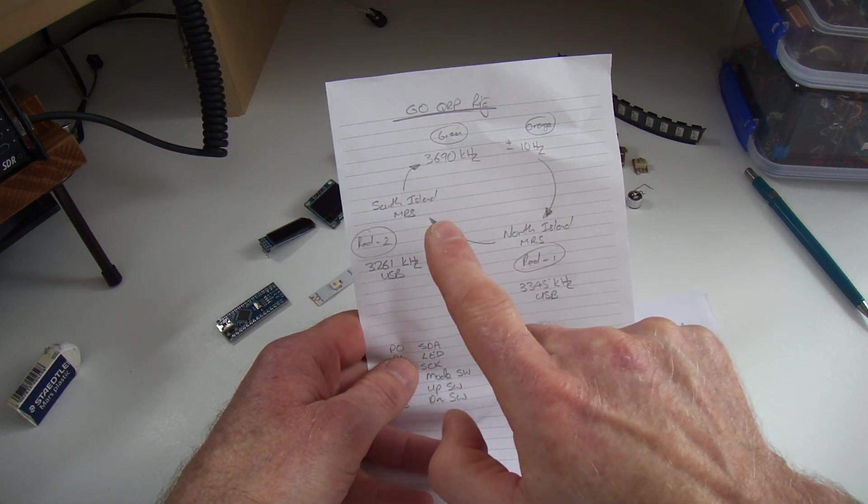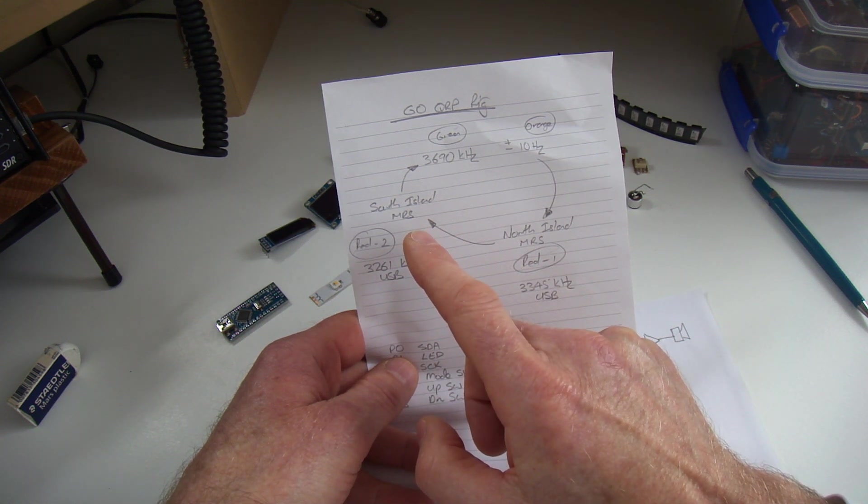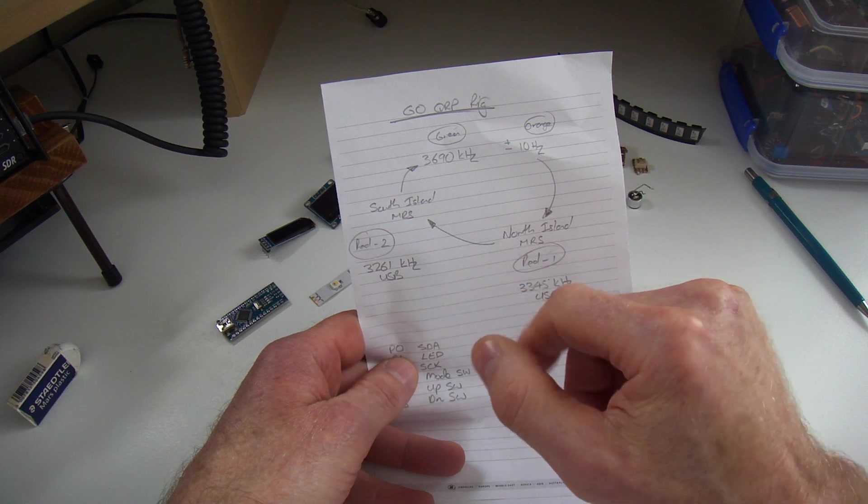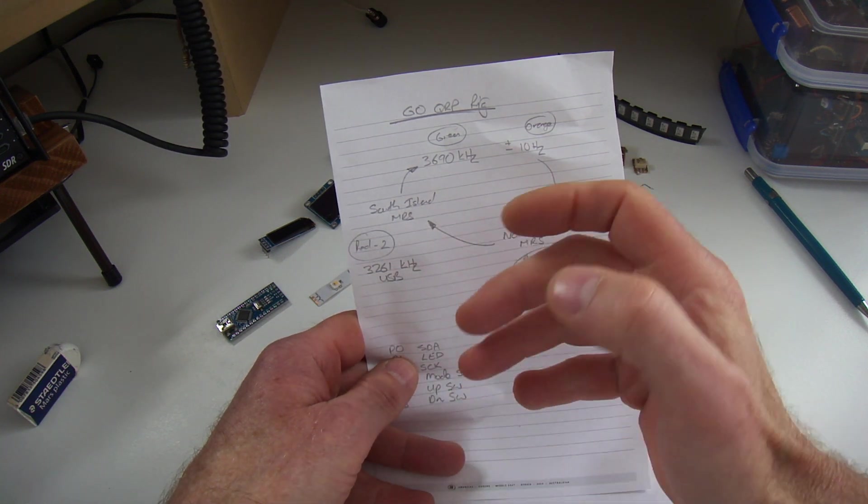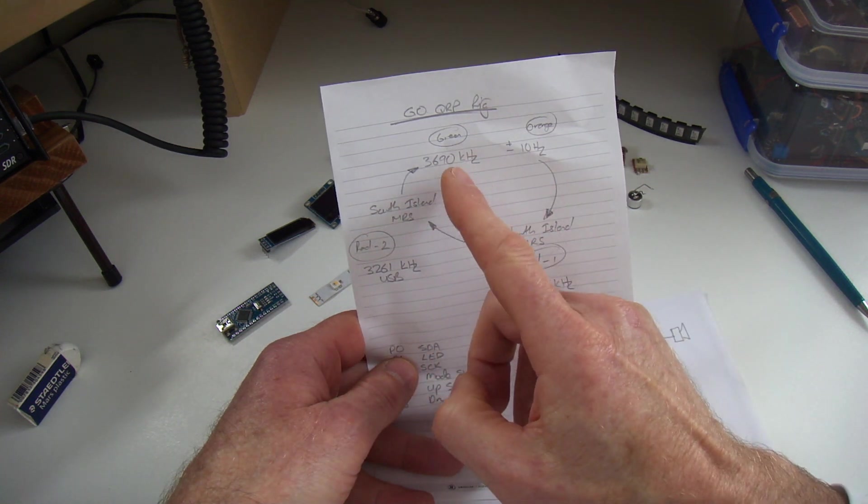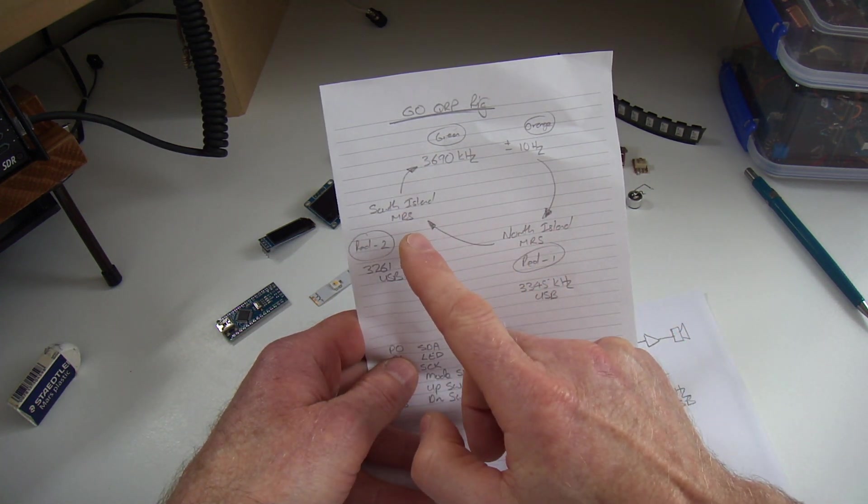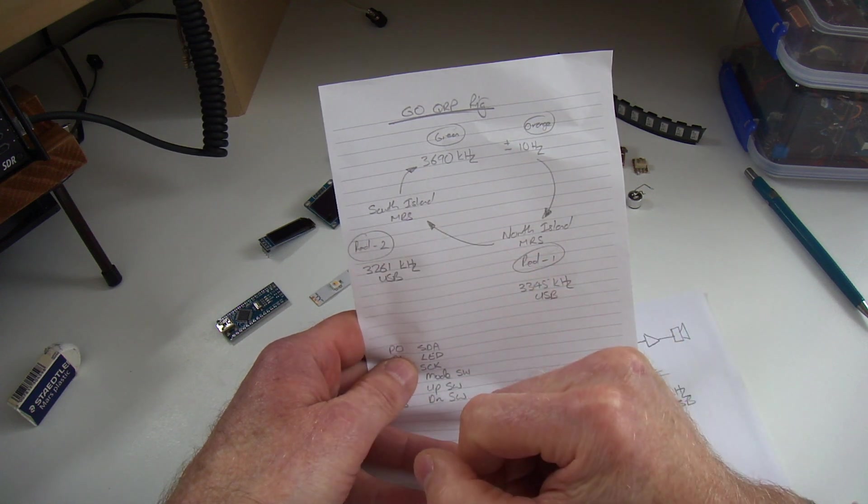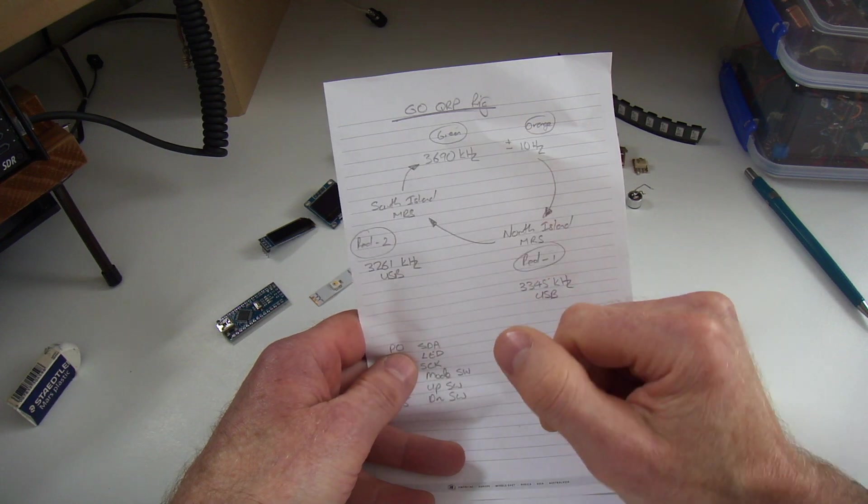And the reason for that is it gives me the ability to tune into the very good weather forecast that gets transmitted through the day and night, and also gives me the ability that if it was an emergency and I couldn't raise anybody on the 80 meter band, to tap into the operators on that particular service as a last resort. So that's the plan.